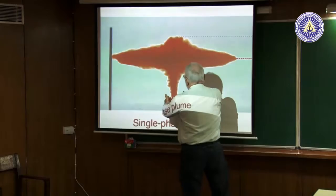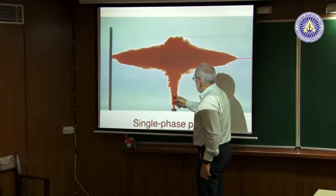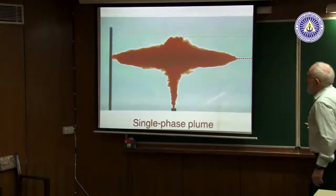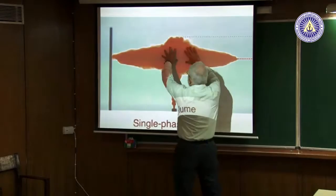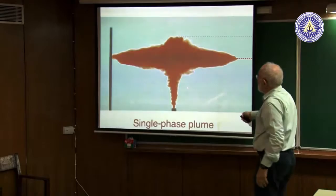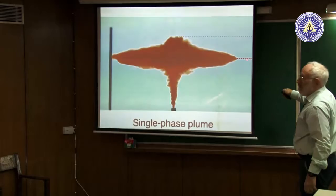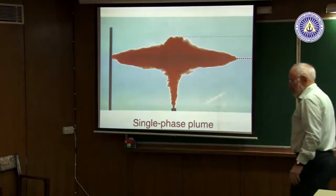The plume mixes in more and more fluid. It was originally very light; now it's less light because it has taken in relatively heavy fluid. Since we imagine it's on a density gradient, eventually it reaches its same density level, indicated by the red lines. It has some momentum so it overshoots, then comes back down and travels out along the neutral density level. What goes on there is what we want to talk about.